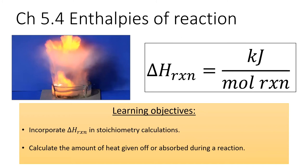In this lesson, we will learn a very useful kind of enthalpy: the enthalpy change during a reaction, abbreviated delta H subscript Rxn. Knowing this value allows us to convert how much heat is given off or absorbed during a chemical change. In other words, this value will allow us to convert between moles of chemical and kilojoules of energy during that chemical's reaction.